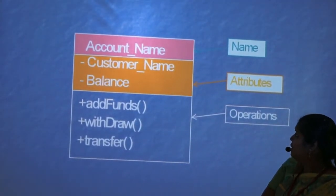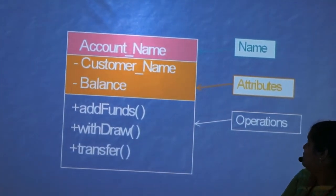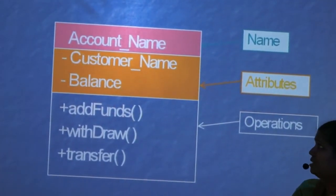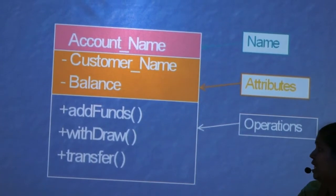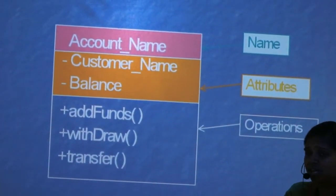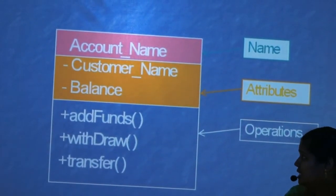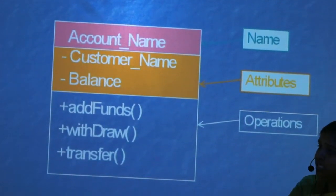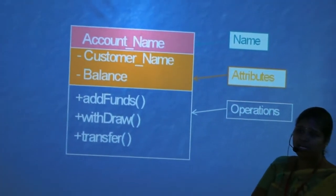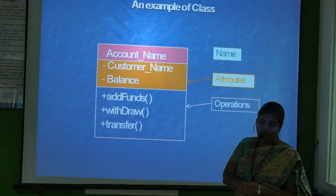In this example, 'Account' is the name of the class. The second compartment holds the attributes — the customer name and balance. The third compartment holds the operations — he can add or withdraw, and he can enquire about the balance. This is the total structure of the class diagram: first the class name, second the attributes, third the operations.